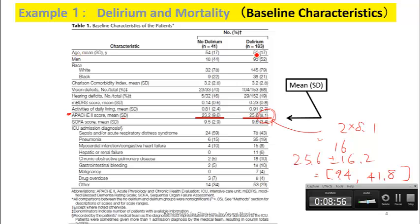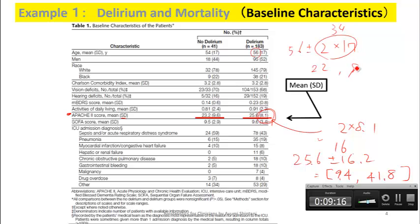Let's look at age. The mean age in the delirium group is 56, with SD of 17. You do 2 times 17 equals 34, so 56 minus 34 is 22 and 56 plus 34 is 90. This tells you about 95% of patients lie in the age range of 22 to 90. If you're reading this paper, you might think this population is very similar to your own patient population, and therefore this paper is worth reading and you can apply the results to your practice.